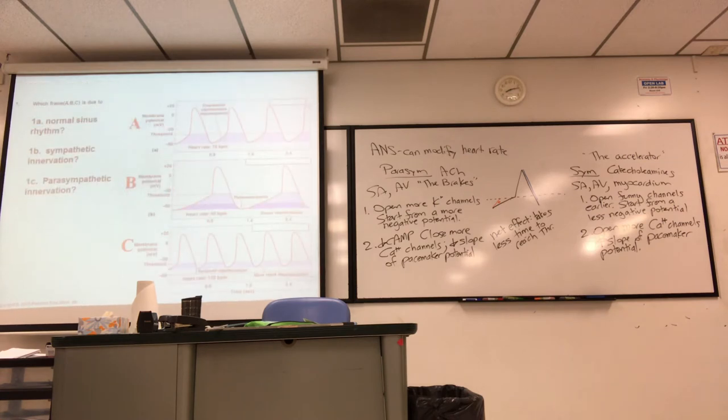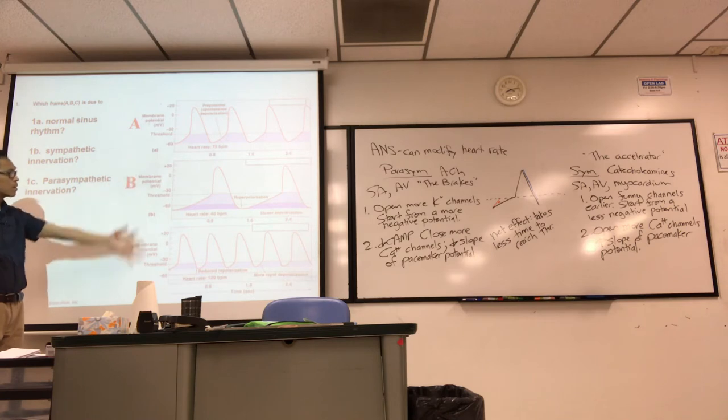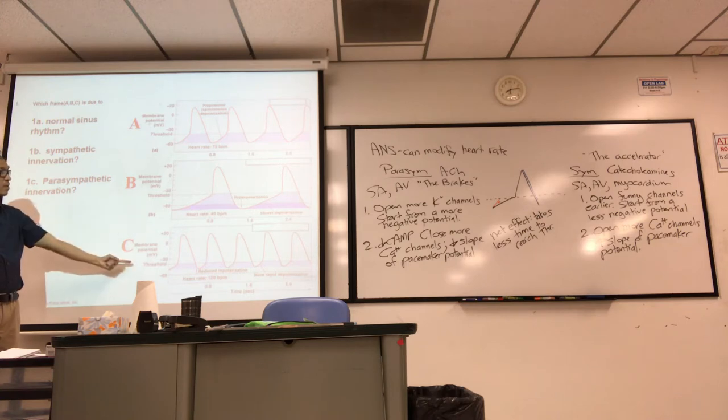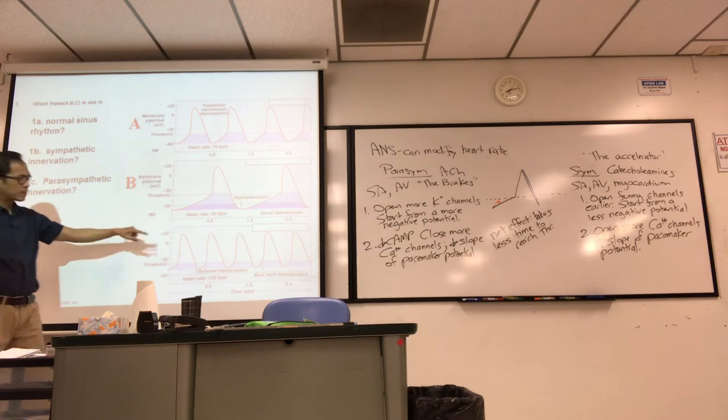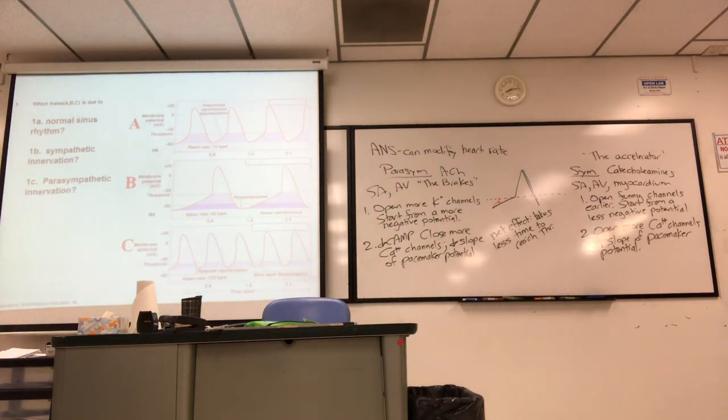So just by looking at it, to be fair, I should kind of give you a normal to compare. So therefore, B is, which is it? Sympathetic or parasympathetic? Parasympathetic. Therefore, C is sympathetic. Just look at it. Is it faster? Is it slower? Sometimes they tell you. It makes it an easy question to answer. So that's how you modify the heart rate.